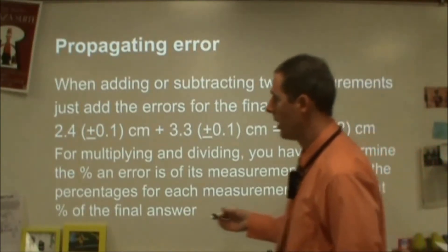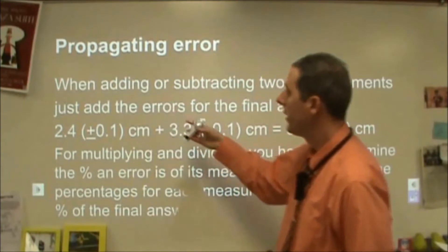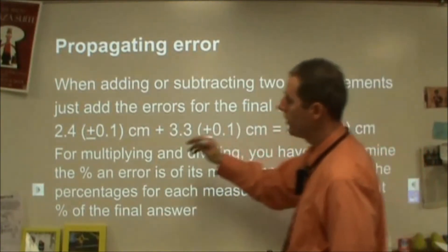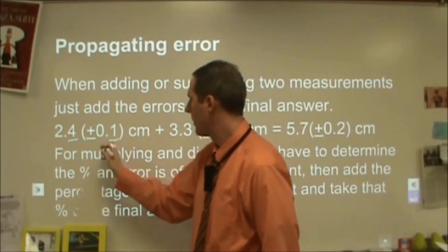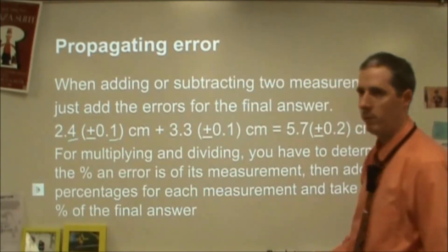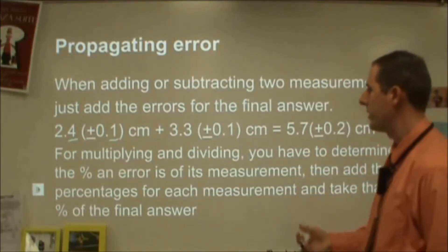So first of all, assigning error: what I do is I just take the final sig fig and then I add a plus or minus of 0.1 of that value, or you know, one place of that.